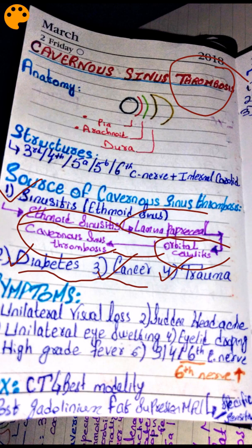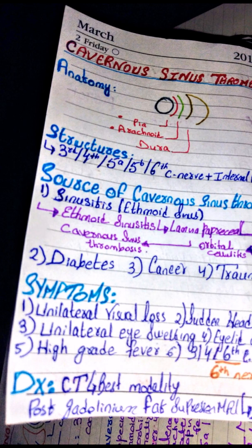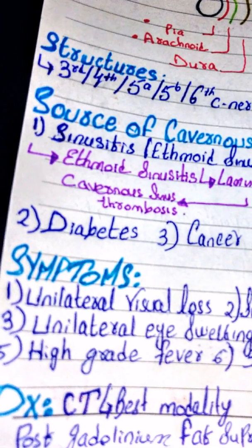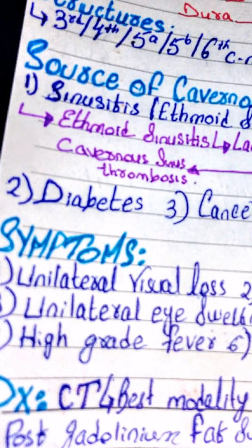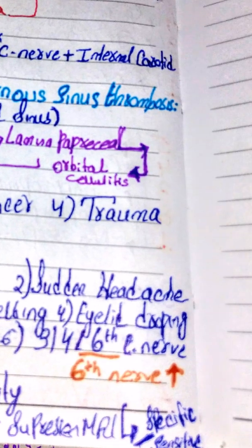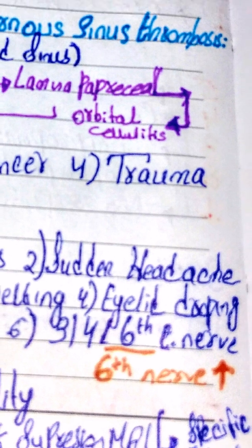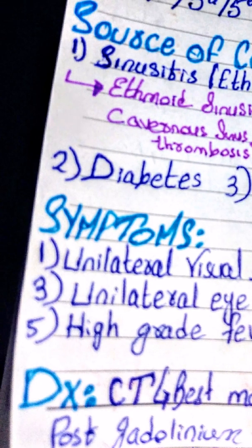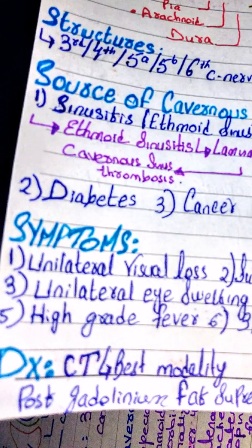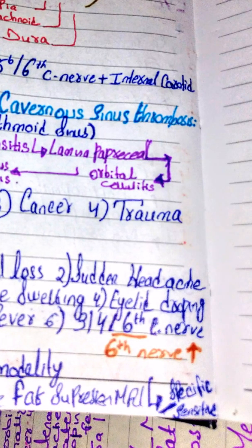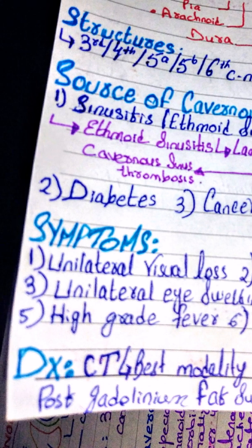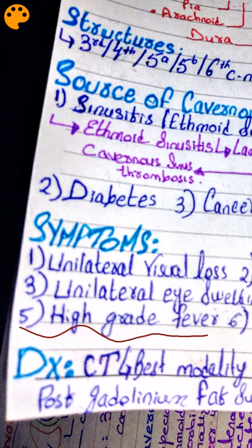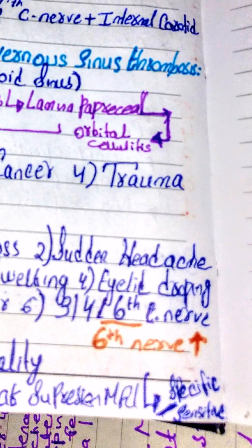Now let's discuss the symptoms of cavernous sinus thrombosis. The patient presents with unilateral visual loss and sudden severe headache — always consider sudden severe headache as possibly cavernous sinus thrombosis or subarachnoid hemorrhage. Other symptoms include unilateral eye swelling, eyelid drooping, and high-grade fever, as cavernous sinus thrombosis is a life-threatening condition. There is also third, fourth, and sixth cranial nerve palsy.